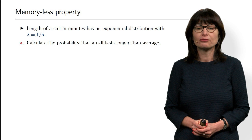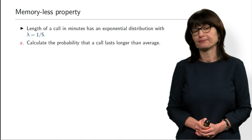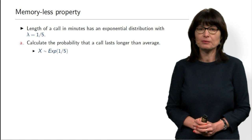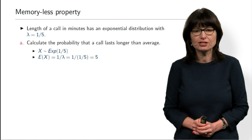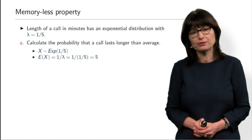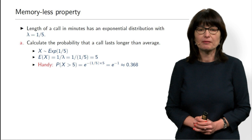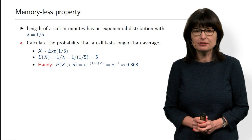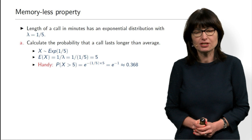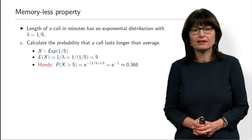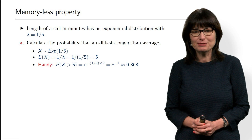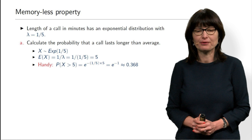Question A: calculate the probability that a call will last longer than average. We say X has exponential distribution with parameter 1/5. The expectation is 1/λ = 1/(1/5) = 5 minutes. Then what is the probability that X is greater than 5? Using our handy formula, the probability decays exponentially: we have (1/5)×5 in the exponent, giving e^{−1}, which is approximately 0.368. So for any exponential distribution, approximately 37% of the time, the value will exceed its average.